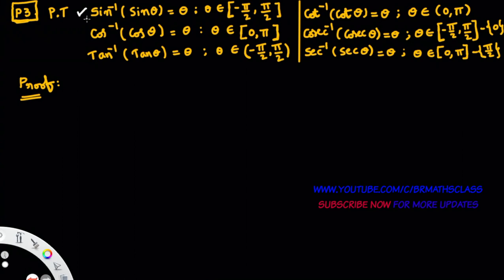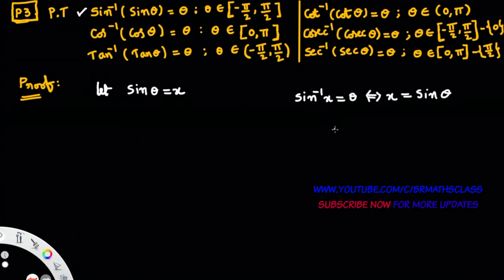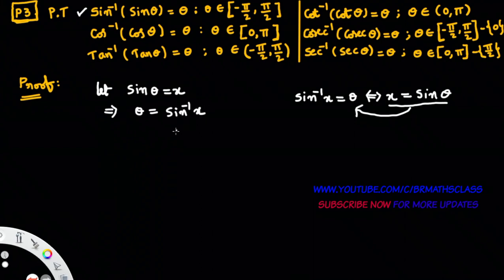Now let's start the proof. To prove this result, I'll take sin theta equals x. From the definition of inverse sin function, we know that if x equals sin theta, then we can write theta equals sin inverse of x. So if sin theta equals x, then theta is equals to sin inverse of x.